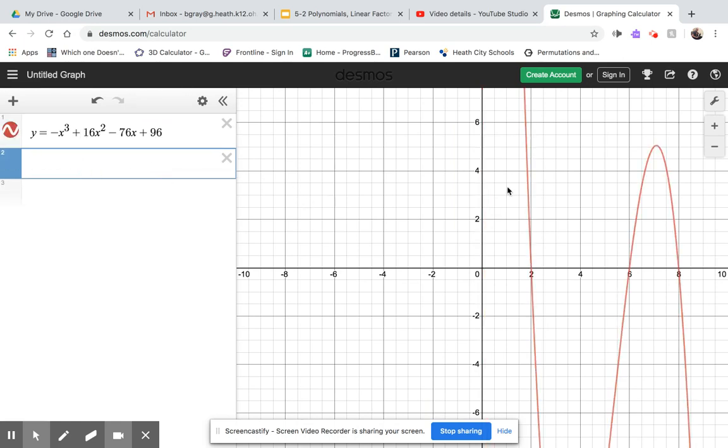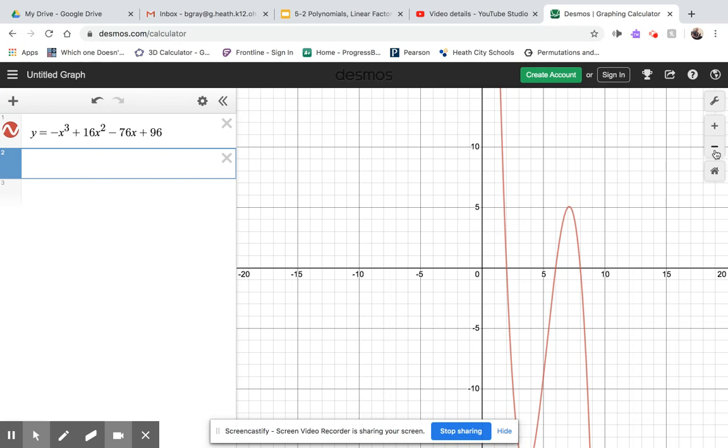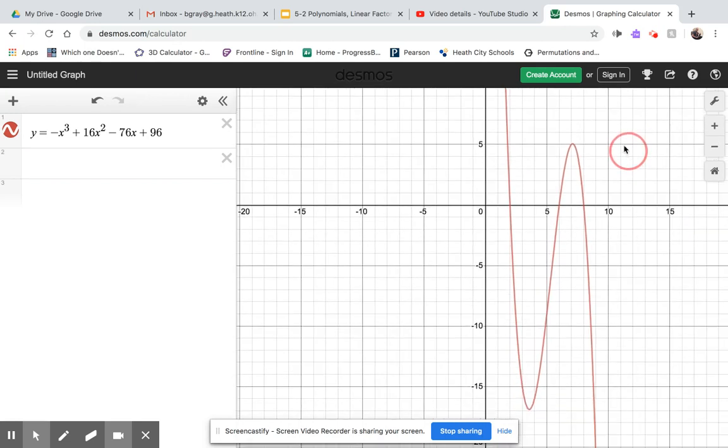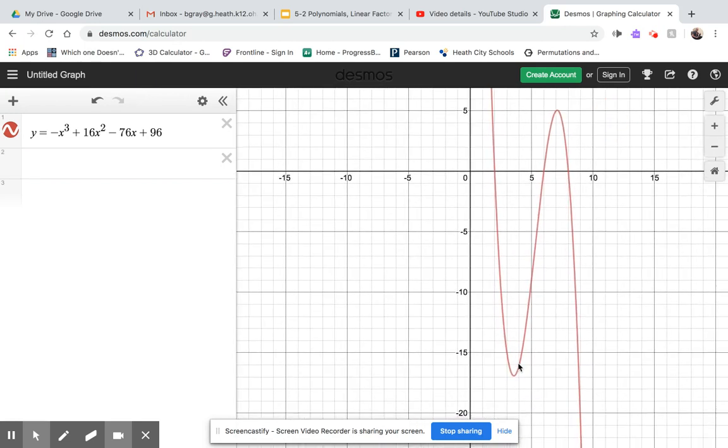You can see the relative maximum right about here. You can't quite see the relative minimum, so I'm going to zoom out a bit until I can move it up a little bit. Now I can see both of those.